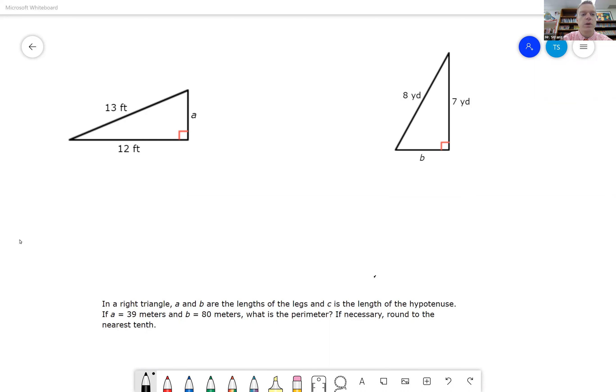So we're going to start with the first problem up on the left here, 13, 12, and A. Remember, this long diagonal side right here is your hypotenuse, or your C squared.